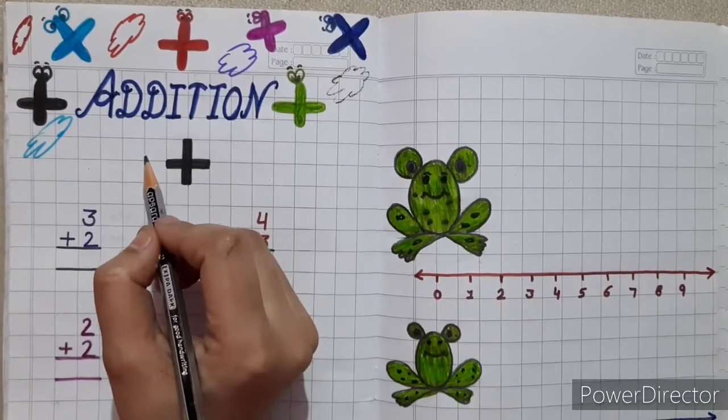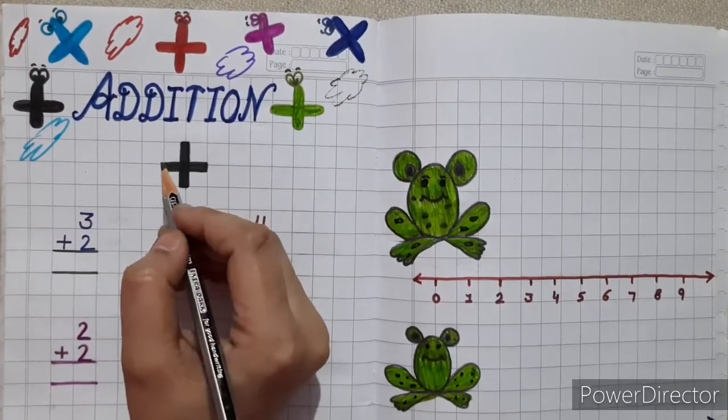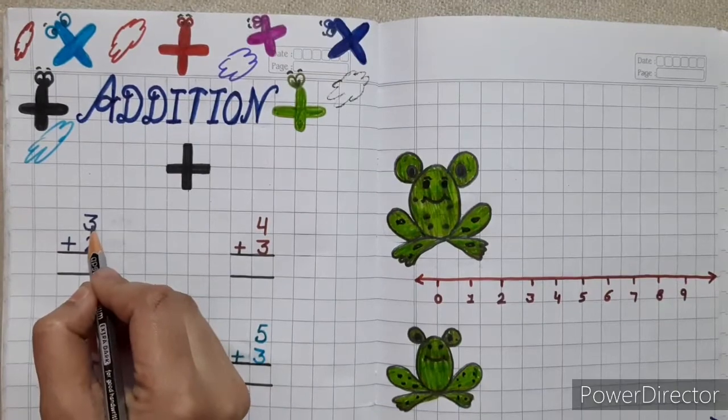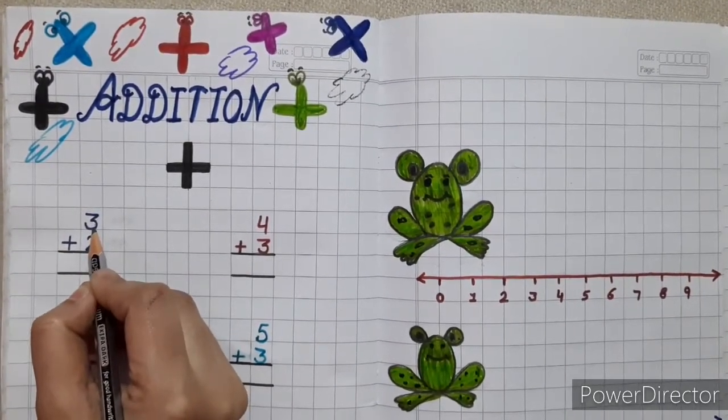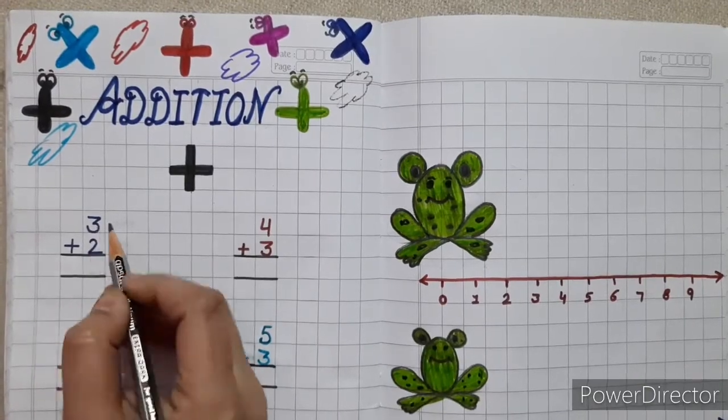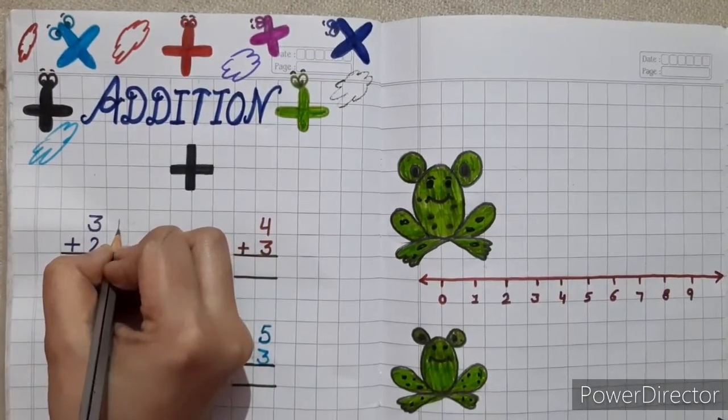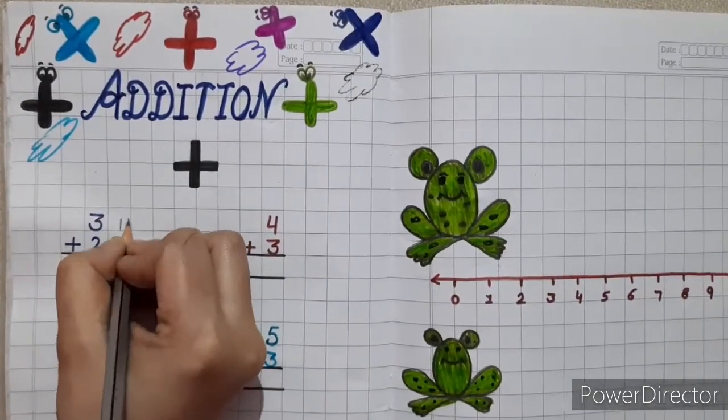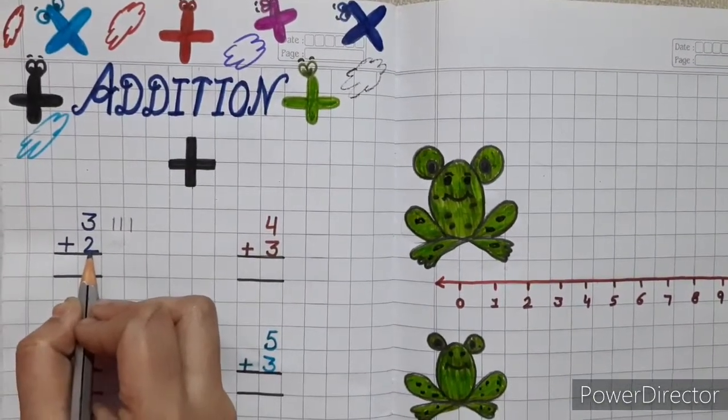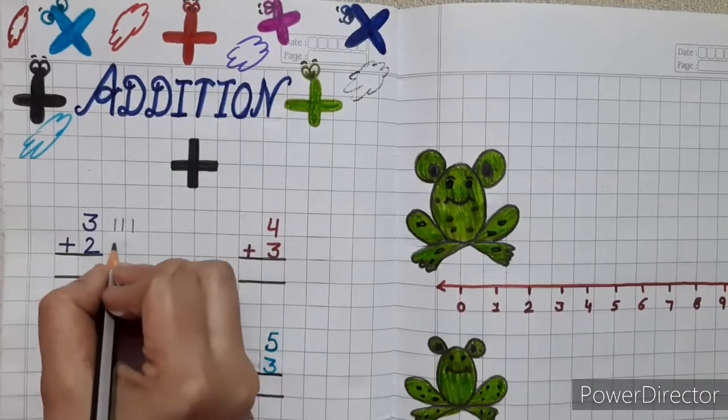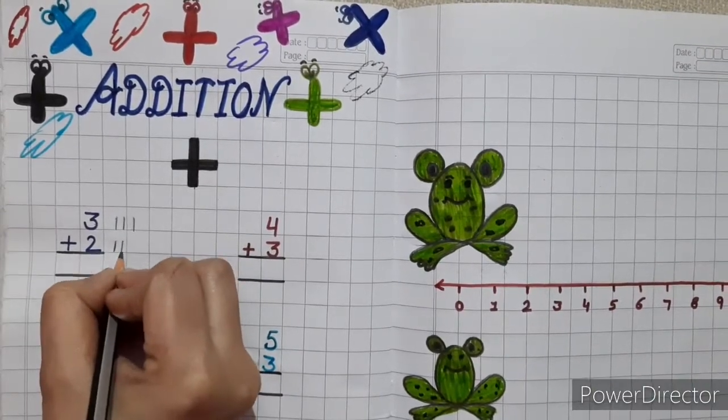First method is line method. Kids, this is 3 plus 2. This is 3, so draw 3 lines here. 1, 2, 3. This is 2, so draw 2 lines here. 1, 2.